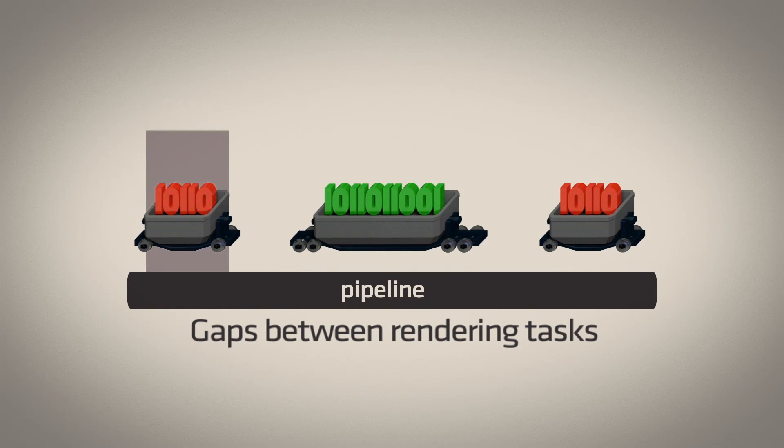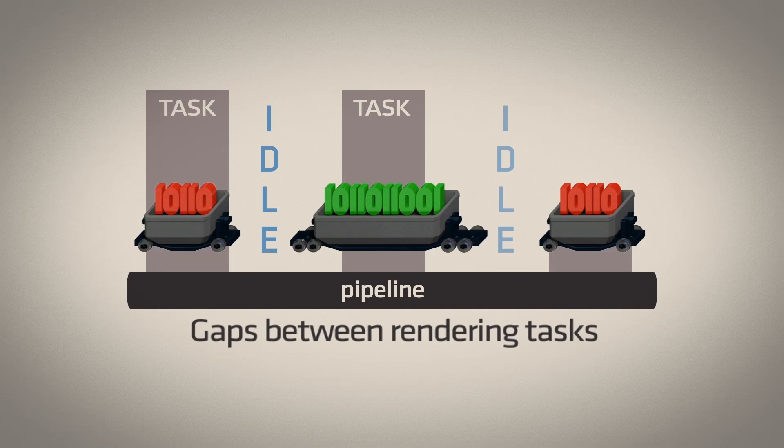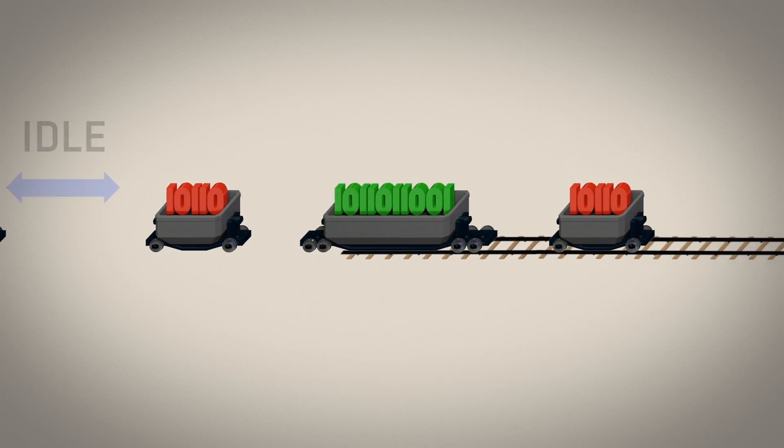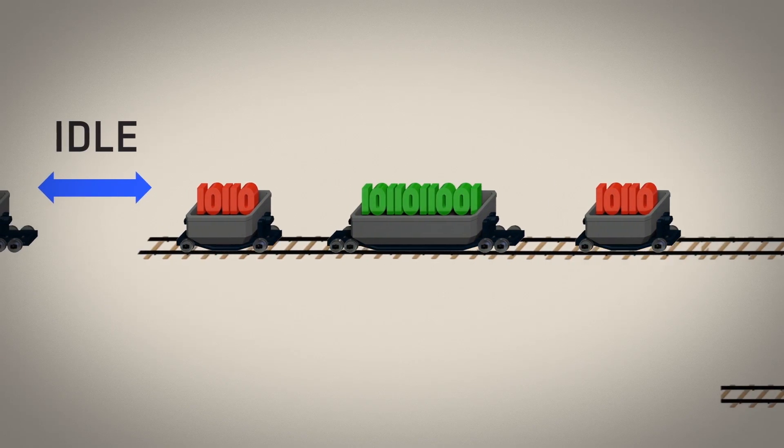Gaps between rendering tasks leave part of the GPU idling, which reduces GPU efficiency. Asynchronous shaders address this by scheduling compute tasks asynchronously, or concurrently, with graphics rendering tasks without waiting for current rendering work to finish.